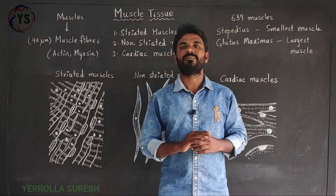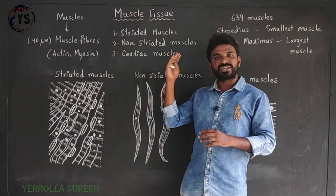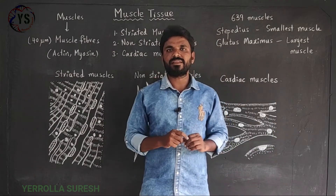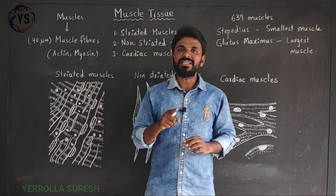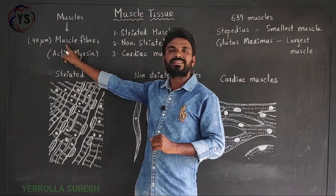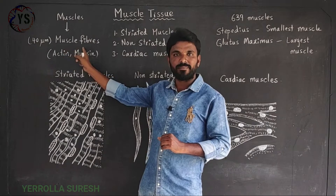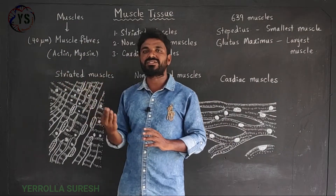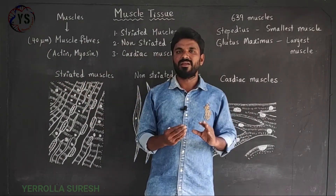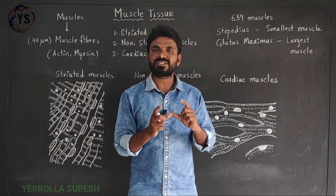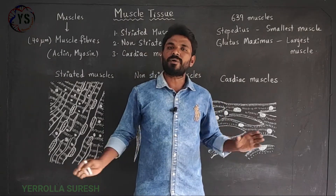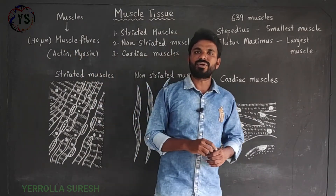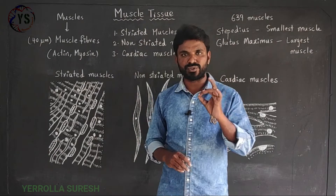Let's concentrate on the structure and functions of muscle tissue. We have 639 muscles in our body. Each muscle is made of many small thread-like structures called muscle fibers. The length of each muscle fiber is approximately 40 micrometers, so they are very small thread-like structures. With a group of all these muscle fibers, muscle tissue is made.